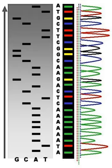DNA sequencing is the process of determining the nucleic acid sequence, the order of nucleotides in DNA. It includes any method or technology that is used to determine the order of the four bases: adenine, guanine, cytosine, and thymine.